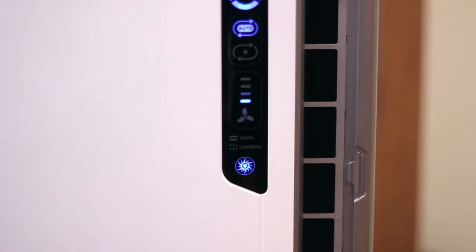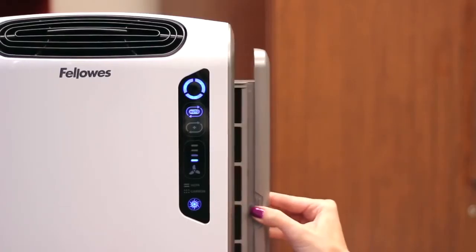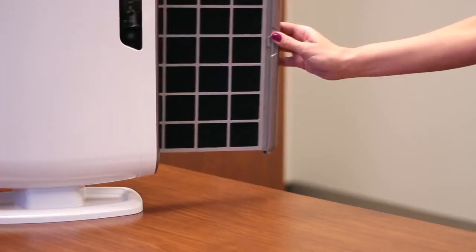First, locate the filter drawer on the right side of your AeraMax air purifier. To open the filter drawer, compress the tabs on both sides and completely pull out the filter drawer.